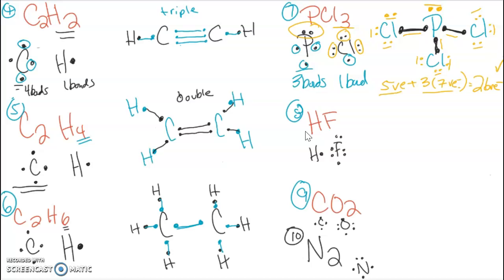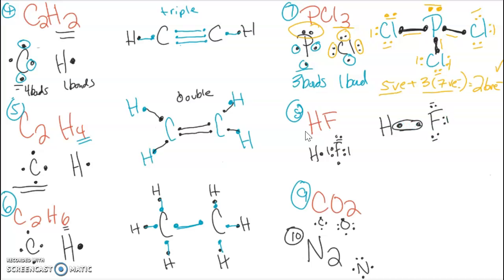Next we're going to look at HF — hydrogen and fluorine. Both are a hydrogen and a halogen, so they're both going to want only one bond. Hydrogen gives one, fluorine also gives one. We add three lone pairs to fluorine. Fluorine has two, four, six, and eight electrons to get octet. Hydrogen has two, and they both have their single bonds.